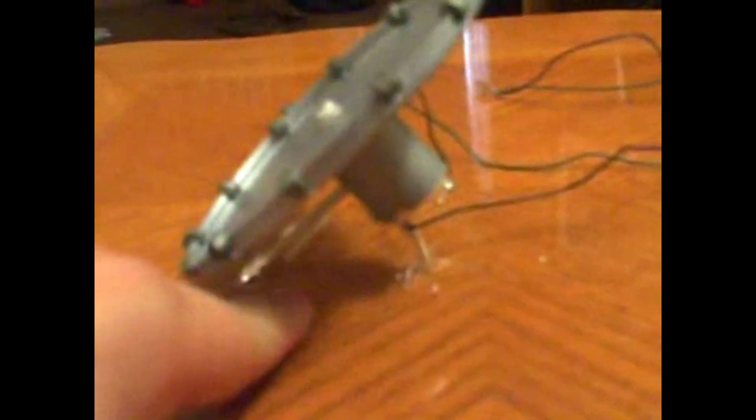I scotch taped each leg of the tripod into place after super gluing them to the motor. I don't want them to slide across the table when I hold the magnet close to get the wheel spinning.